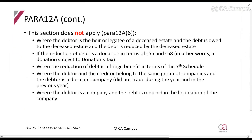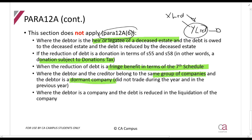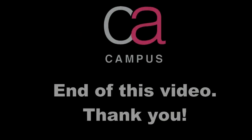Paragraph 12A(6) tells us when there will be no application of this section. Please read through it: it's when there's an heir or legatee, or if it's subject to donations tax, or if it's a fringe benefit - those situations will all get taxed under different sections. Also excluded is where the debtor belongs to the same group of companies and is a dormant company that didn't trade at all. This is common between companies in a group - for example, X Limited has a dormant company Y Limited, X Limited gave it money, they're closing down Y Limited and writing off the debt. SARS doesn't want to tax that situation, which is why it is excluded.